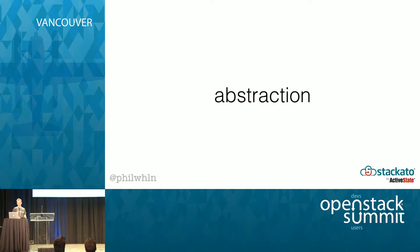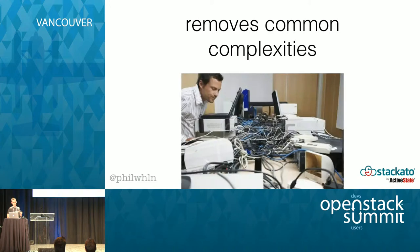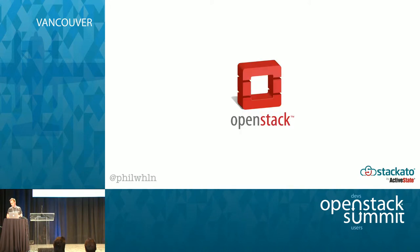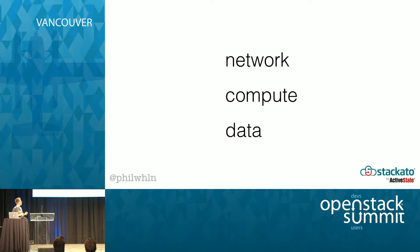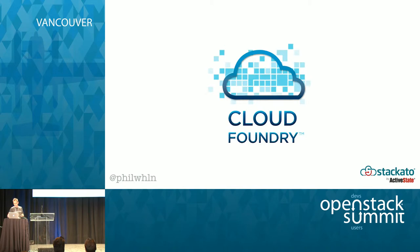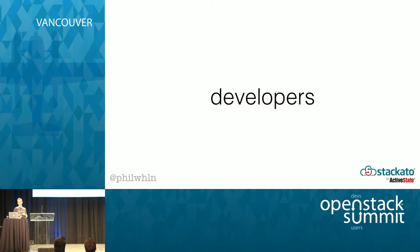I'm going to talk a little bit about abstractions. It's a generalization — it works in 90% of use cases — to remove common complexities. OpenStack is an abstraction of the infrastructure layer, generally for network, compute, and data. Whereas Cloud Foundry is more focused on applications, so for developers to develop applications. We really want developers to be able to focus on what they're good at, and that's writing code.